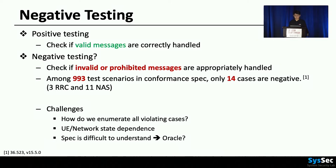What does it mean? Exception handling may not be done correctly. However, there are multiple challenges for doing negative testing. First, how do we enumerate all prohibited or invalid messages that are also security critical? Second, UE and networks send different messages depending on their states, and previous dynamic testing papers focused on stateless cases only. Third, understanding the specification is difficult, and therefore making an oracle — knowing the correct behavior — is difficult.